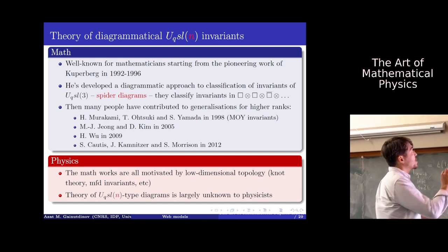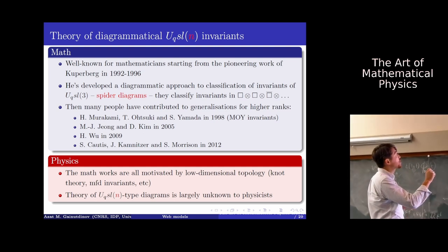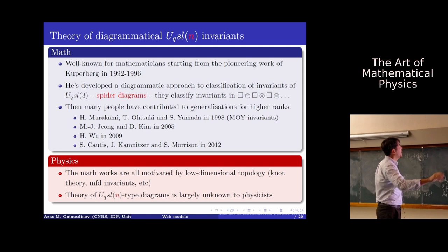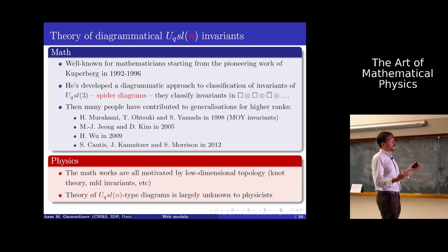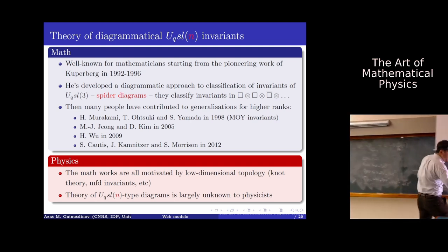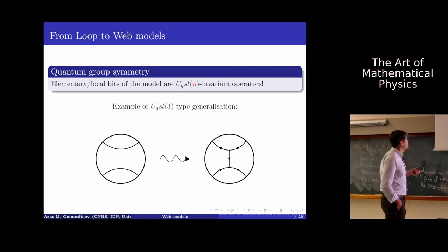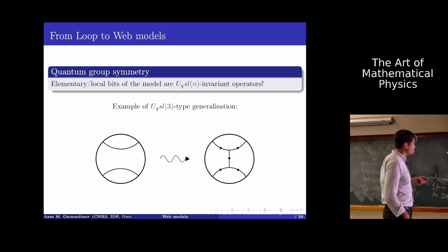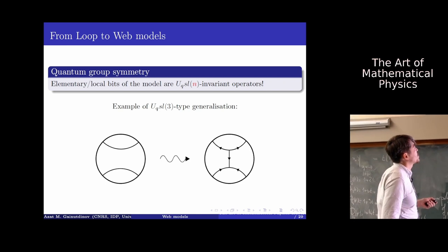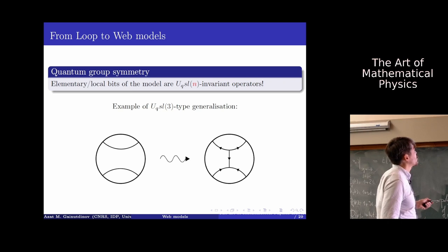Kuperberg developed an approach to classifying invariants of quantum SL3. You take tensor products, in any combination, of fundamental and dual-to-fundamental representations, and he classified these U_q(SL3) invariants in terms of so-called spider diagrams. The elementary spider diagrams — instead of pieces of loops like Temperley-Lieb generators — are diagrams with bifurcations or branchings.